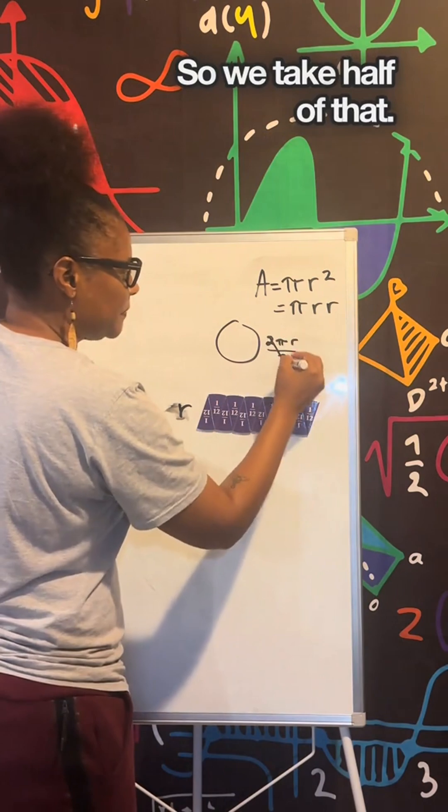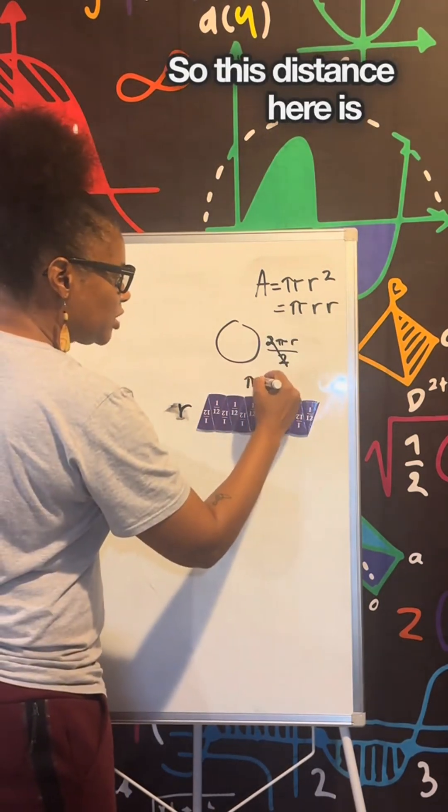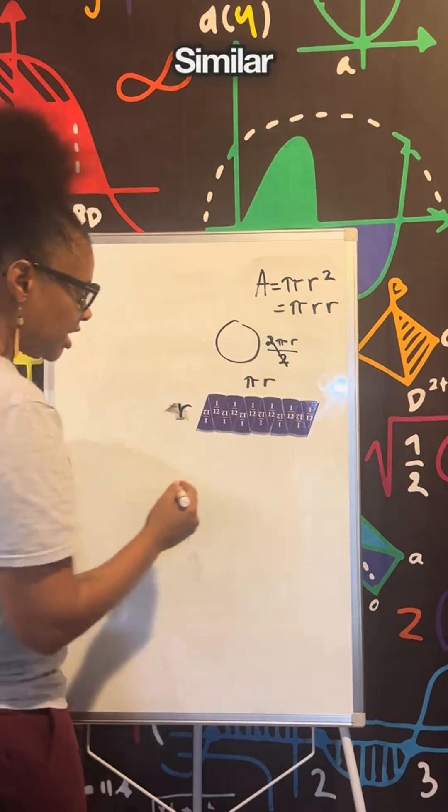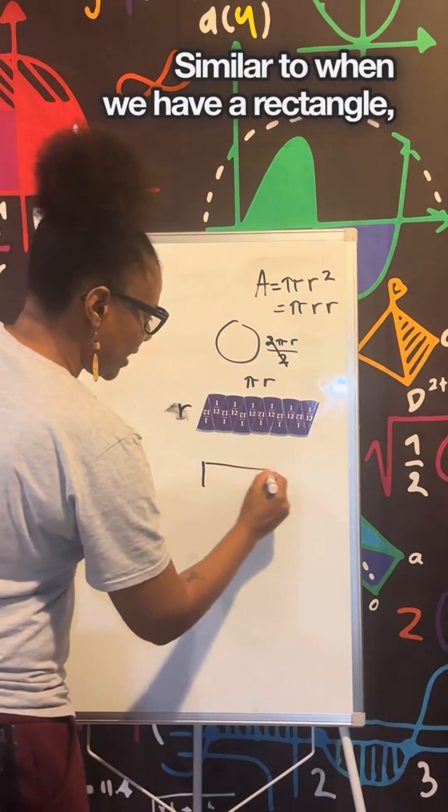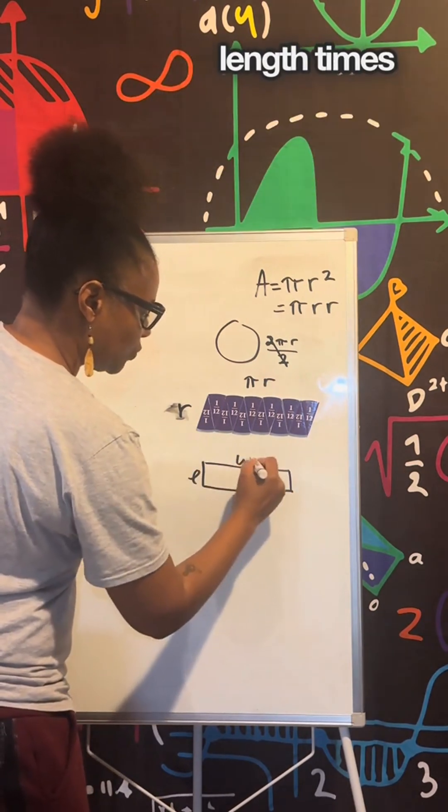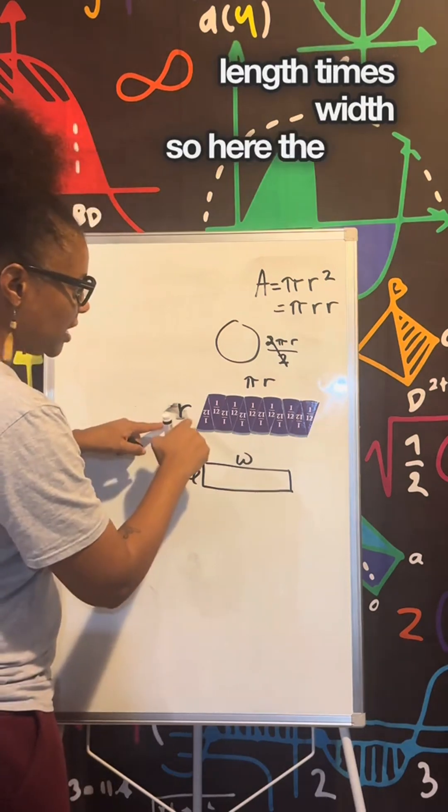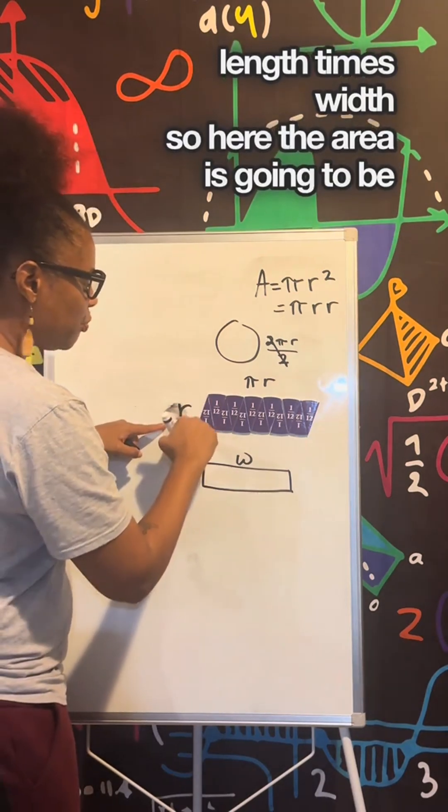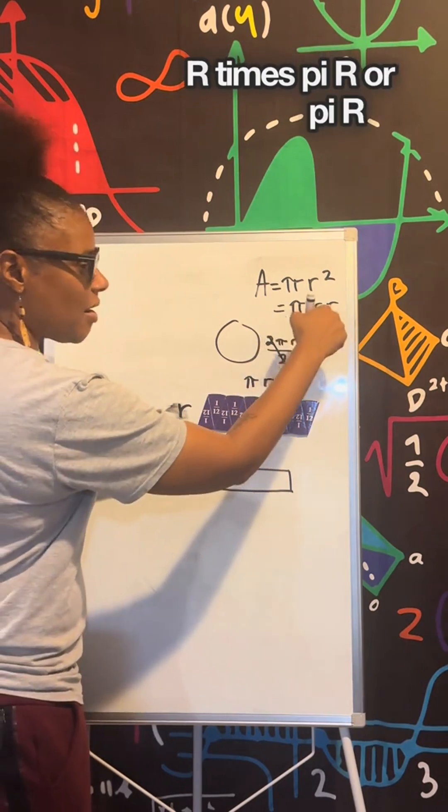So we take half of that, so this distance here is πr. Similar to when we have a rectangle, right? A rectangle is length times width. So here the area is going to be r times πr, or πr·r, or πr².